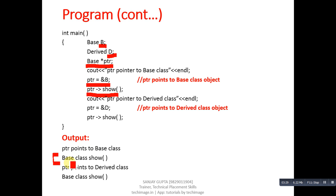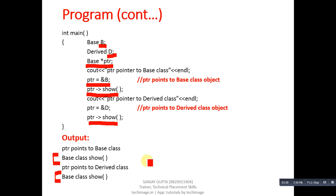You can see the output: base class show message is printed. Then ptr is assigned the address of d, which is a derived class object, but ptr is still a base class pointer. When we call show again through ptr, it again calls the show function of base class because ptr is of base class type. You can see the output again shows the base class show method. This is the problem — even when we assign a derived class object's address, the compiler always calls functions based on the pointer type.